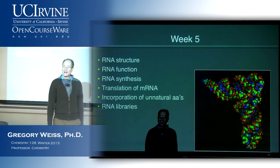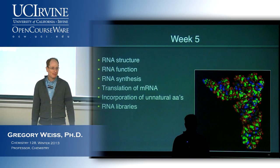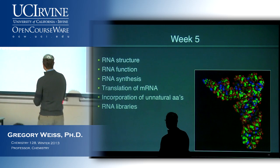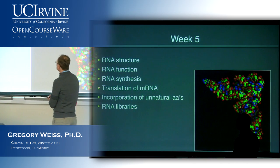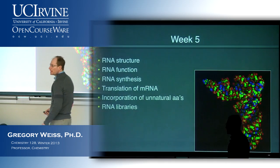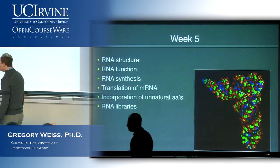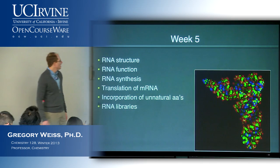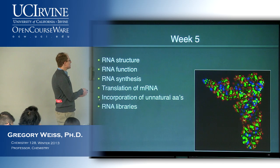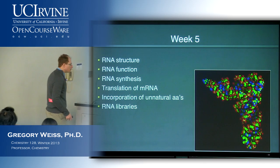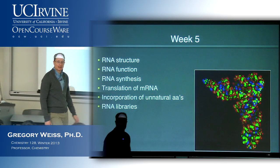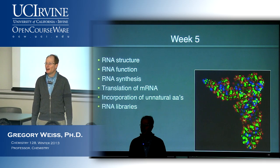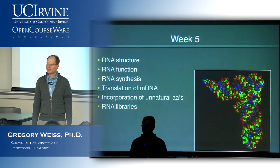Welcome back. We're going to pick up where we left off last time. Last time we were talking about RNA and all things RNA related. In particular today, we're going to be talking about translation of messenger RNA to make proteins. We'll be looking at the intricacies of that, how it's regulated, and other aspects. And then we'll look at incorporation of unnatural amino acids into proteins. This is an important frontier in chemical biology because it allows us to expand the palette of what's available for doing experiments involving proteins.